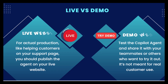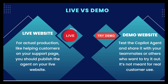First of all, we should know what a live and demo website is in Copilot Studio. For live website — for actual production, like helping customers on your support page — you should publish the agent on your live website. Make sure before sending the web link you publish your agent so that it updates for your users. A live website is a website that is accessible to the public on the internet.